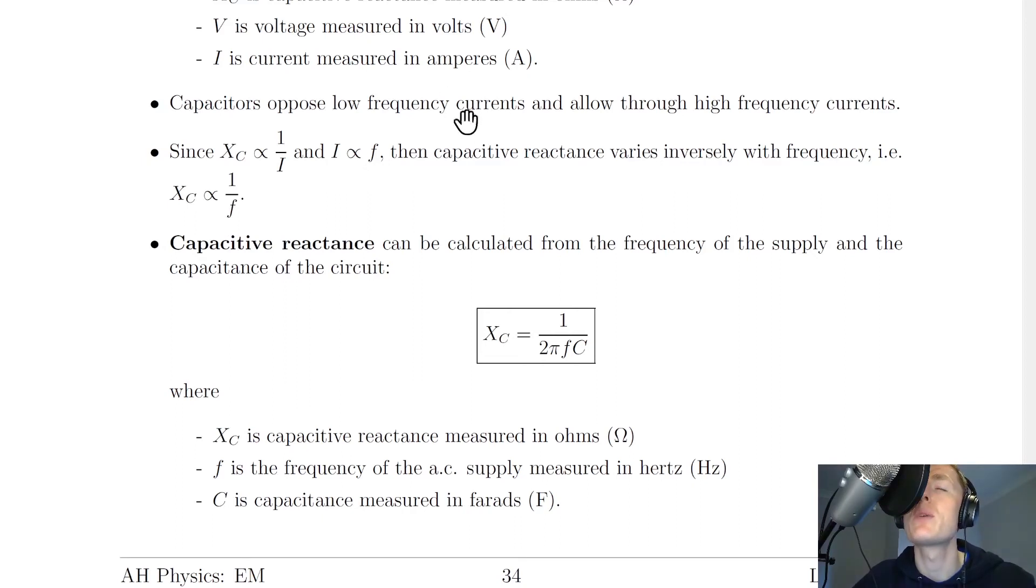Whereas if we have a low frequency current, then this number on the denominator is smaller, and that means our capacitive reactance is larger, which means that capacitors will oppose these low frequency currents.